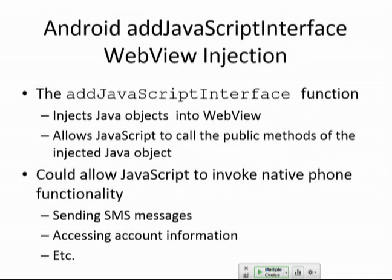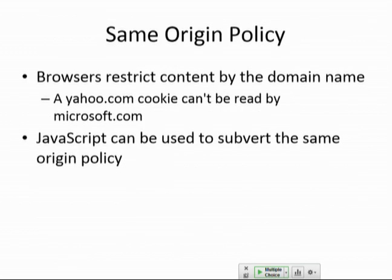There's 'addJavaScriptInterface,' which lets you put Java objects into WebView and allows JavaScript to call the methods of your Java object. So you can run the features of your app through the browser. Now malicious web pages will be able to get inside the app, get its data, and use its functionality — which could get you in trouble.